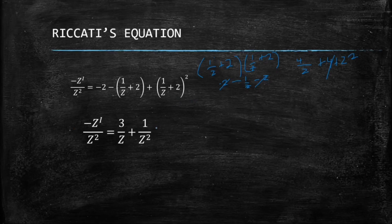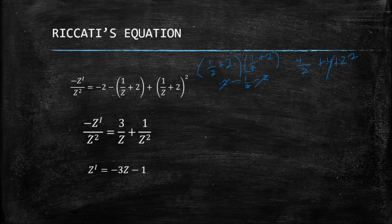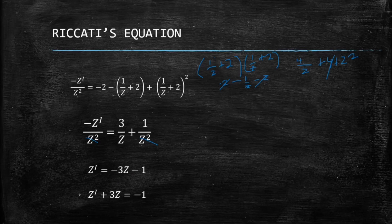After simplifying, we have -z'/z² = 3/z + 1/z². To make this linear, we multiply through by -z², which gives z' - 3z = -1. We rearrange this into standard linear form: z' - 3z = -1, where -3 is the coefficient and -1 is on the right-hand side.